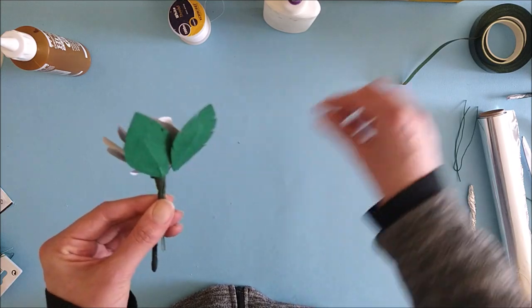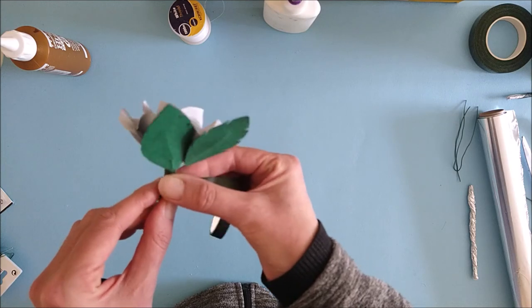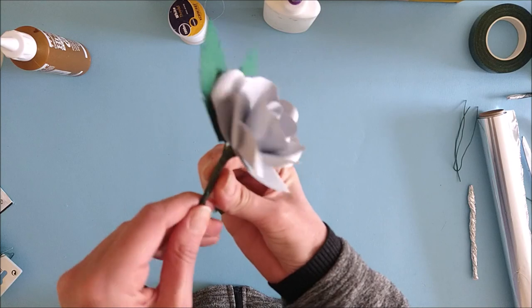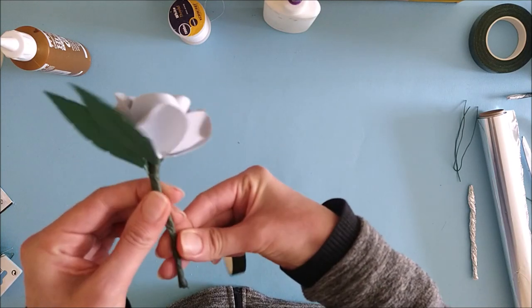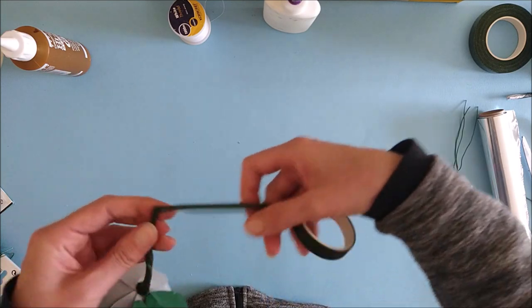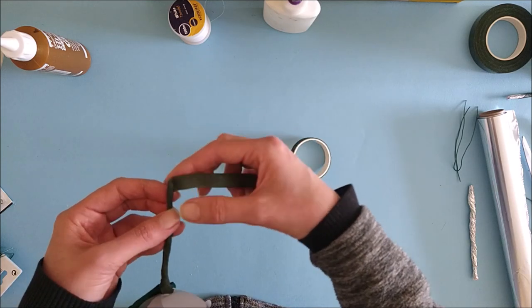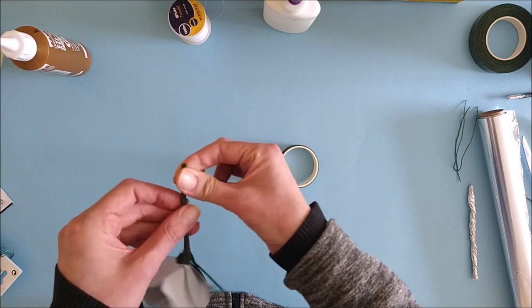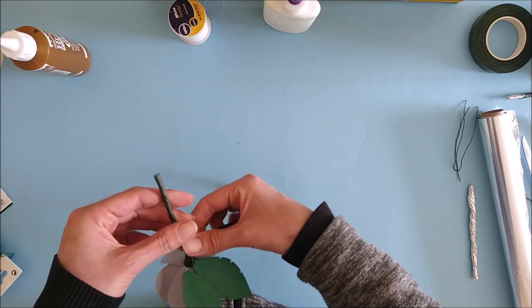Holding the wire down the back of the stem, I'll very simply just use the florist tape and wind it around the whole length of the wire. When I get to the bottom I'll carry on winding and just fold the end over and double back on myself and wind all the way back up the stem.